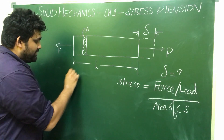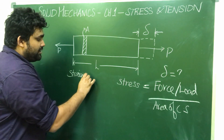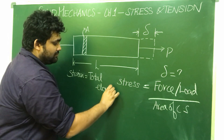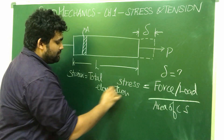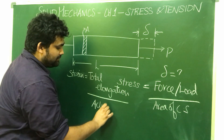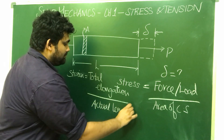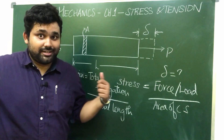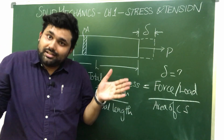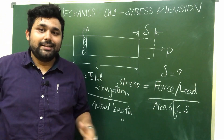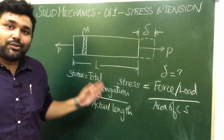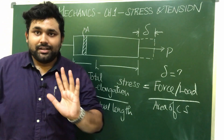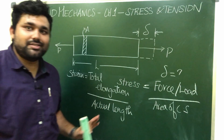Definition number 2: Strain. Strain is the ratio of total elongation to the actual length of the material. When a tensile load acts, the material elongates. When a compressive load acts, the material is compressed. The elongation delta divided by the actual length L is the strain. These are the two simple definitions with their two formulas.